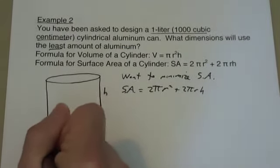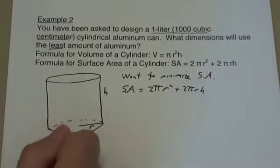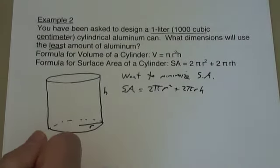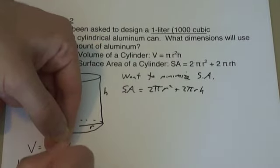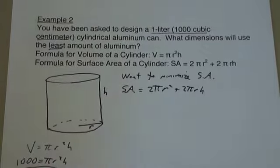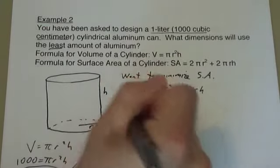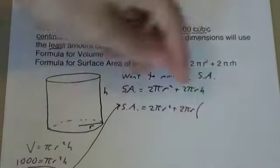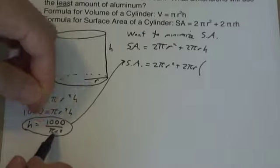The volume is πr²h, and we're given that the volume has to be 1,000. Which means 1,000 = πr²h. So we can solve for h by dividing by πr²: h = 1,000 divided by πr². Now we know h in terms of r. We can plug this into our surface area equation to get: surface area = 2πr² + 2πr times (1,000 divided by πr²).